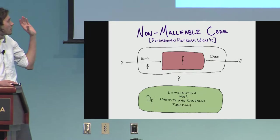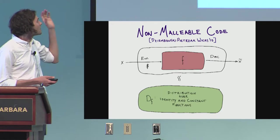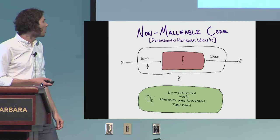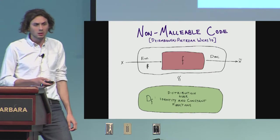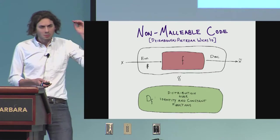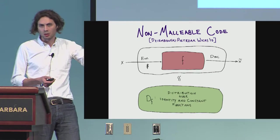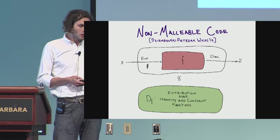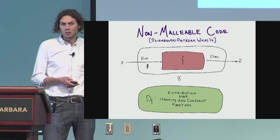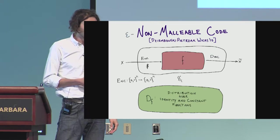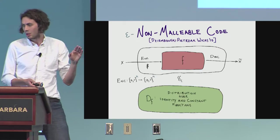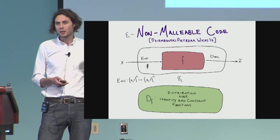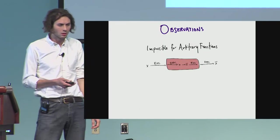Another way that we can frame this is we say that this experiment is statistically close to some distribution over identity and constant functions. So the function defined by randomly encoding, tampering and decoding should be close to some distribution over identity and constant. And we need some parameters. Epsilon is going to correspond to the distance. K is going to be the message length. And N is going to be the codeword length.